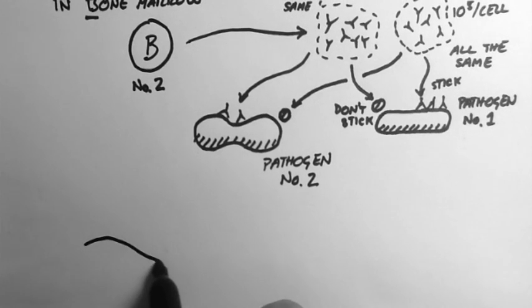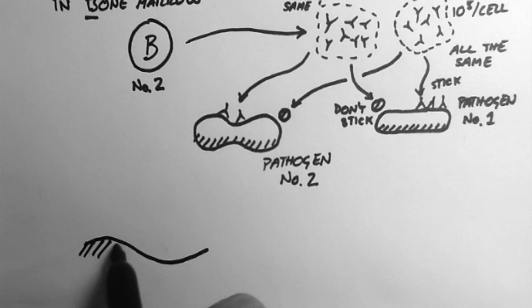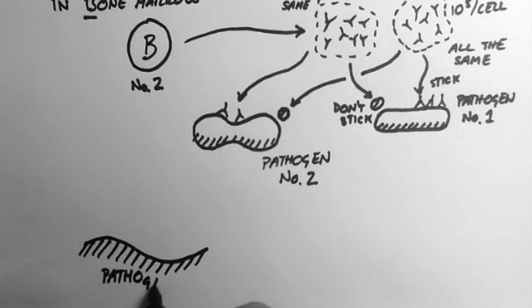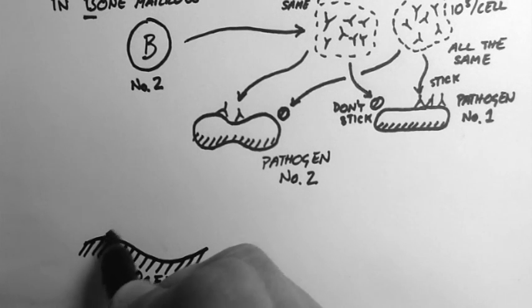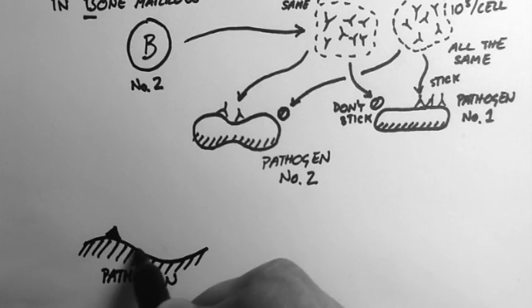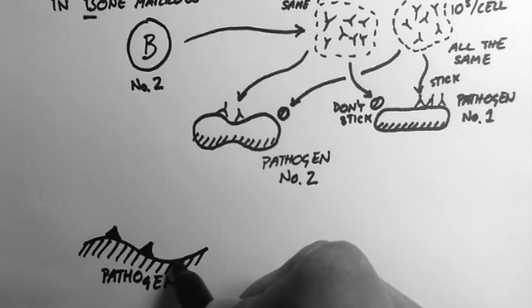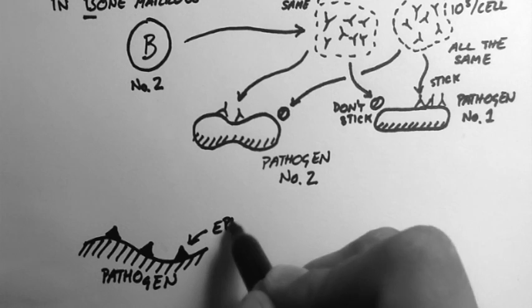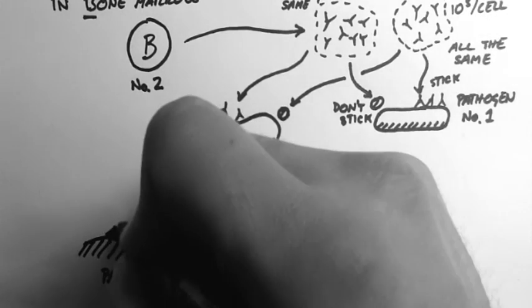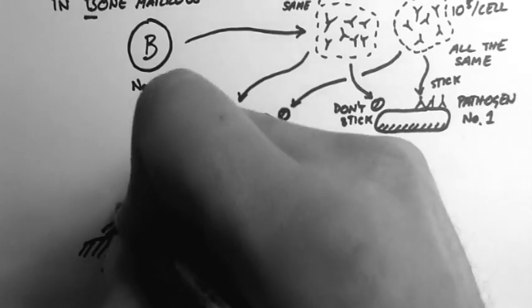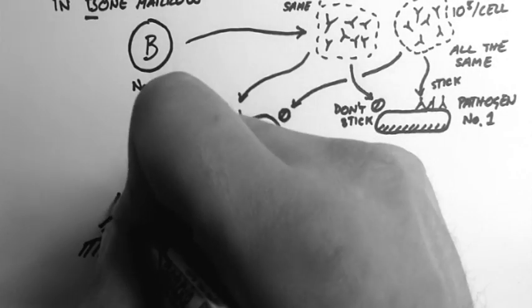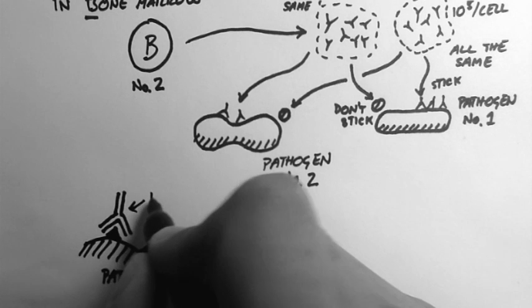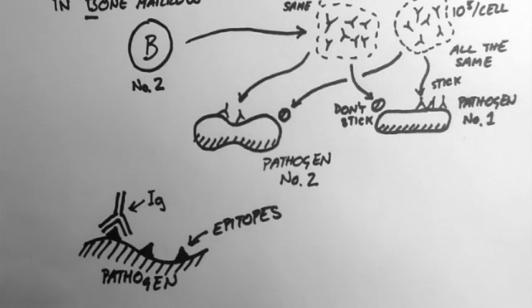Now when I say they stick, they bind onto molecules on the surface of the pathogen. These can be all sorts of molecules: polysaccharides, polypeptides, etc. Now these are called epitopes. These are the places where immunoglobulins stick. So there's my antibody there, and it's sticking onto an epitope on the pathogen surface.